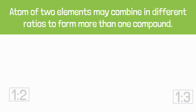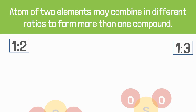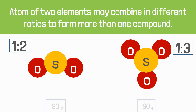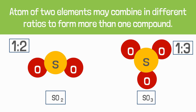Postulate number four: atoms of two elements may combine in different ratios to form more than one compound. For example, when sulfur combines with oxygen, they form two different compounds — sulfur dioxide and sulfur trioxide.